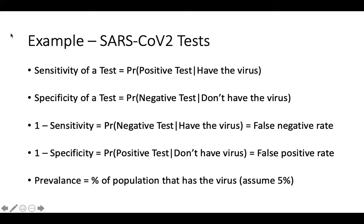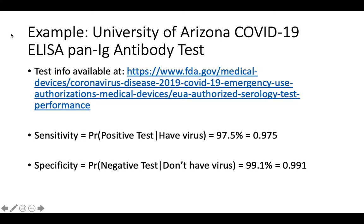Although we don't know this number exactly for SARS-CoV-2 because it is a new disease, we will use 5% as our estimate of the prevalence, as that is what the U.S. Food and Drug Administration has used in its calculations. For our examples, we will use the University of Arizona's antibody test, which is one of over 50 tests for SARS-CoV-2 listed on the U.S. Food and Drug Administration's website. This test has a sensitivity of 97.5% and a specificity of 99.1%. We'll use Bayes' Rule to help you understand how to use these numbers to interpret some hypothetical test results.